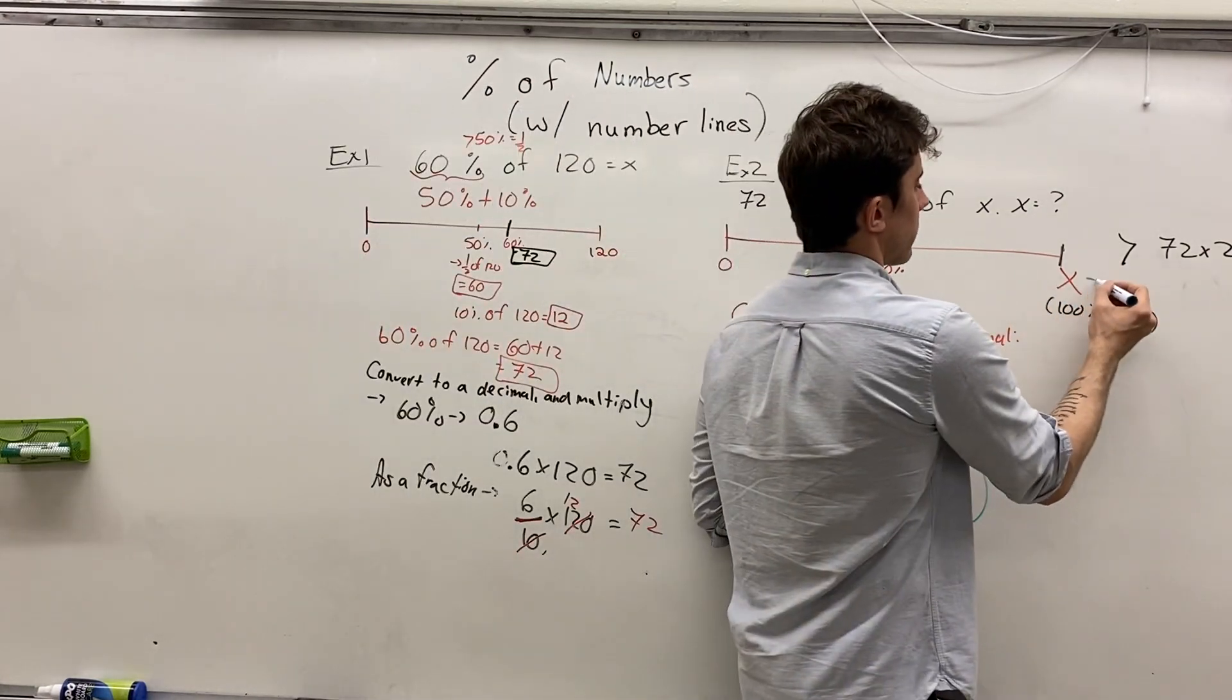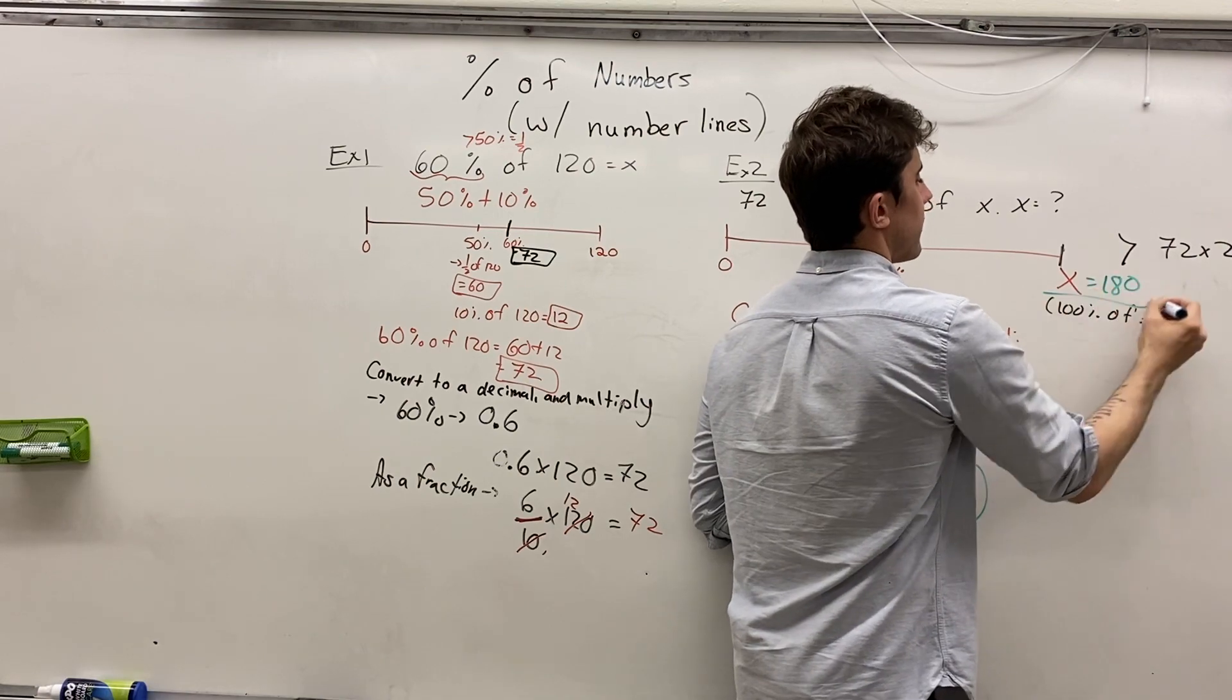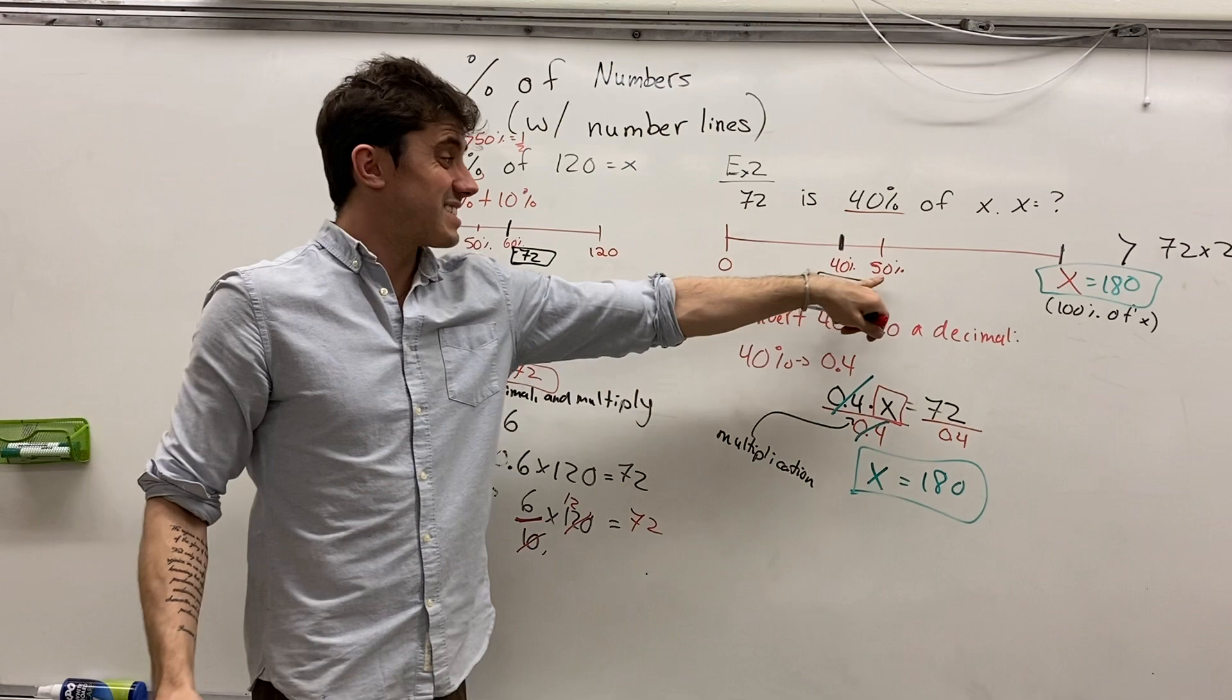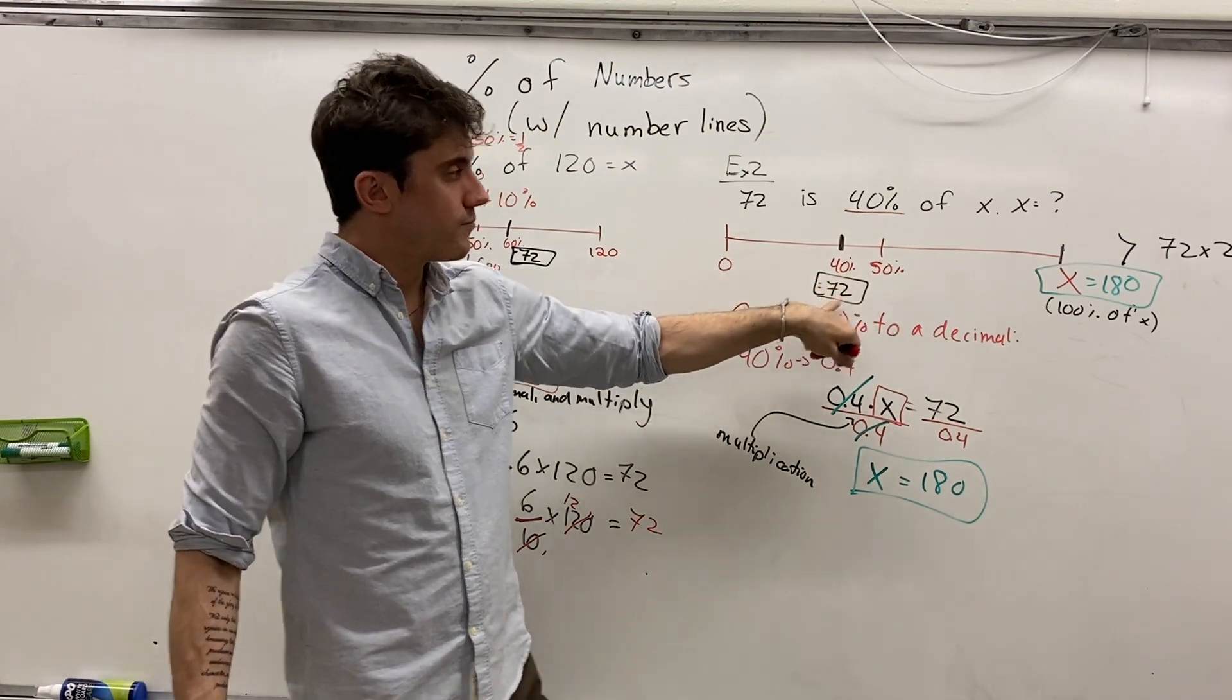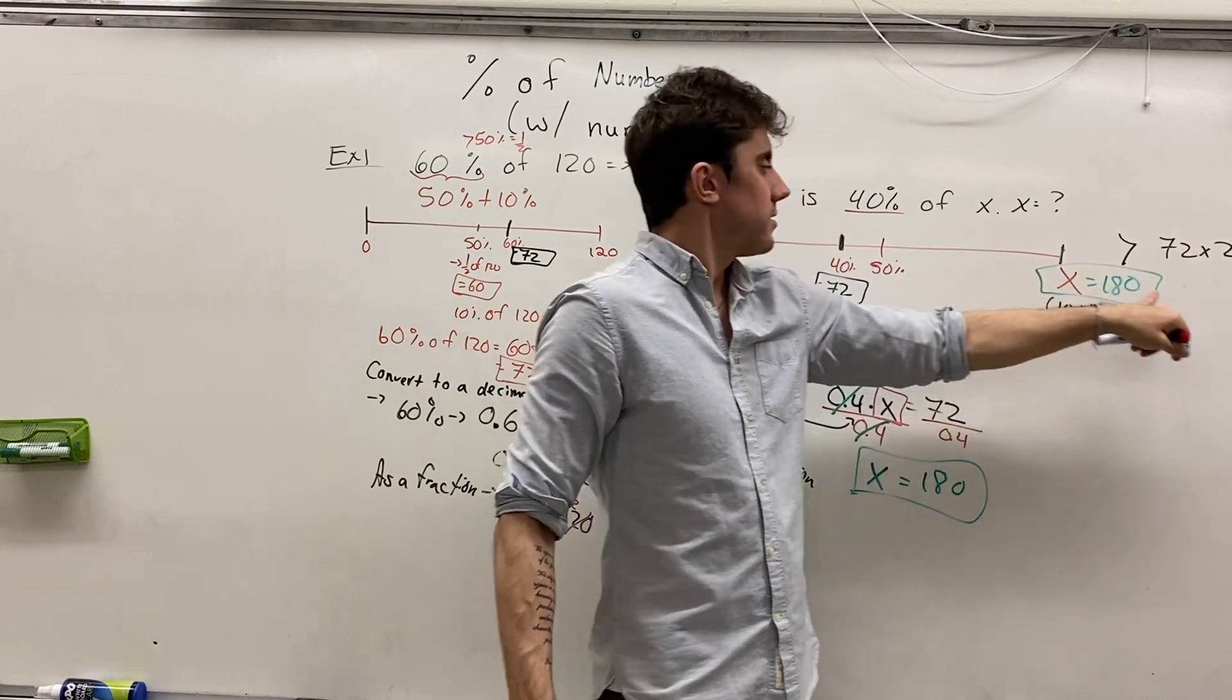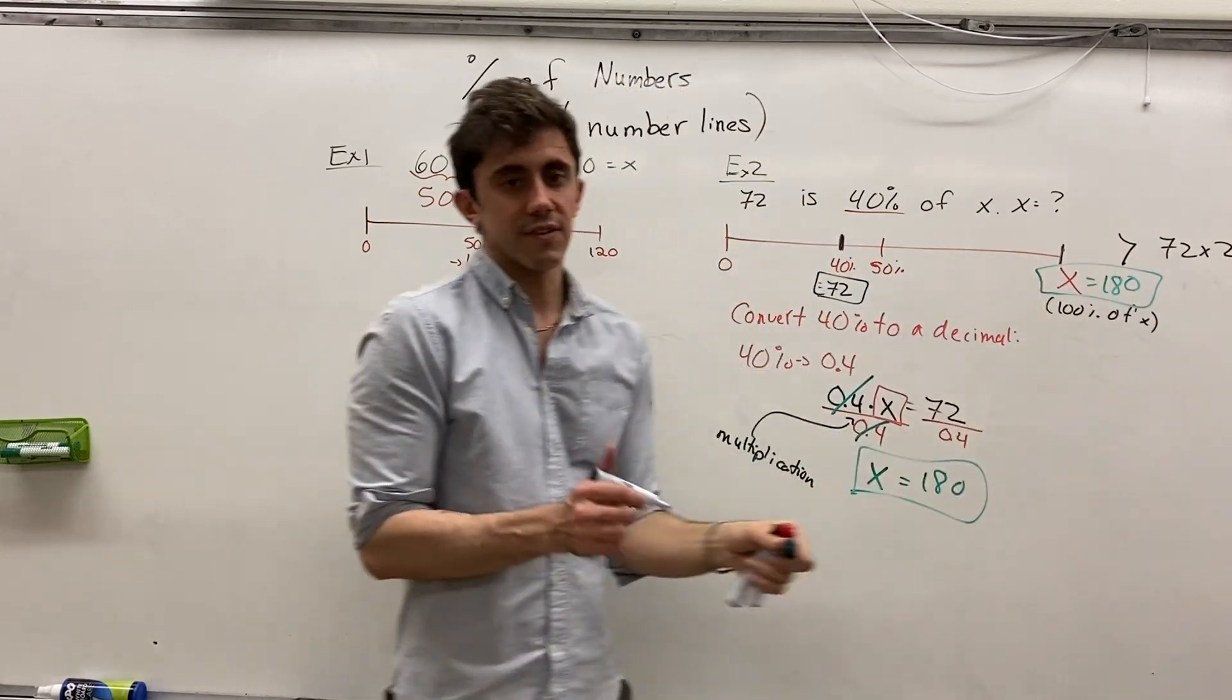And so now I'll bring that back onto our number line. Does that make sense with the information we have right now? Well, we get 40% was less than half. That's 72. So that let us find that x was going to be greater than 144. And 180 certainly does fit the bill.